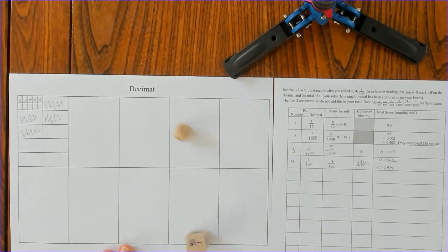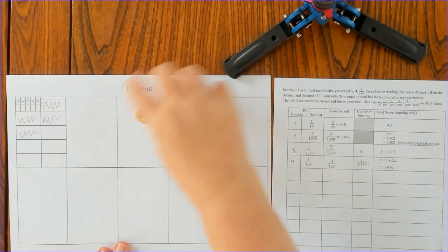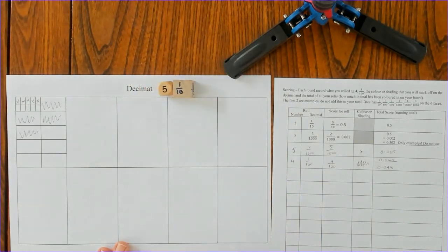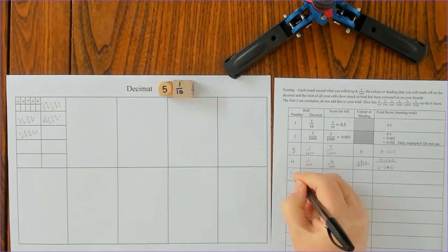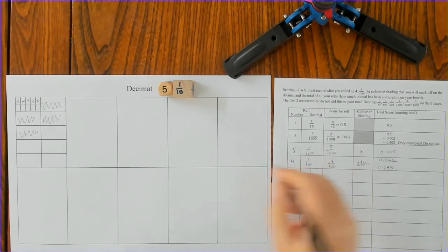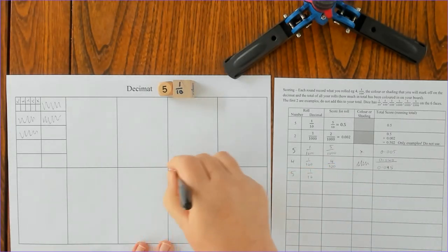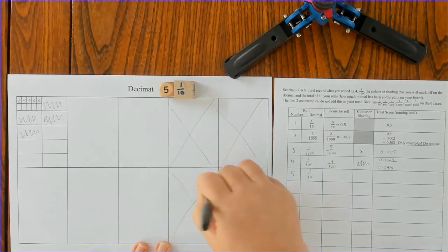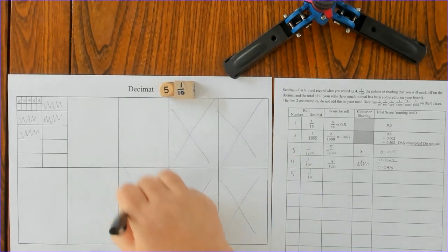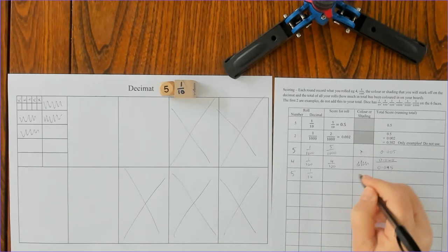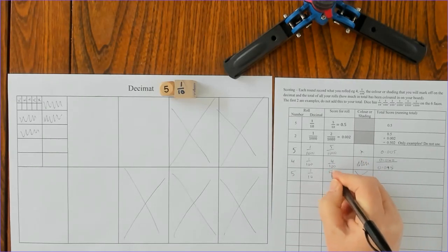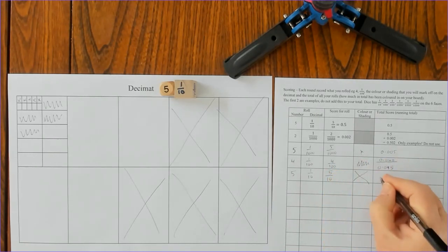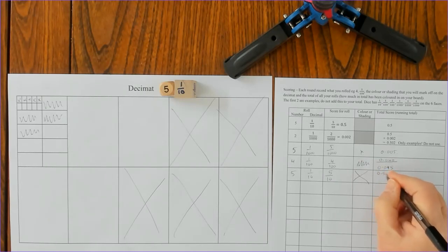Oh, that was a good roll, five tenths. So five pieces of size a tenth. I might go one, two, do that way as well, so you can see what I've done. There's five across there, five tenths.